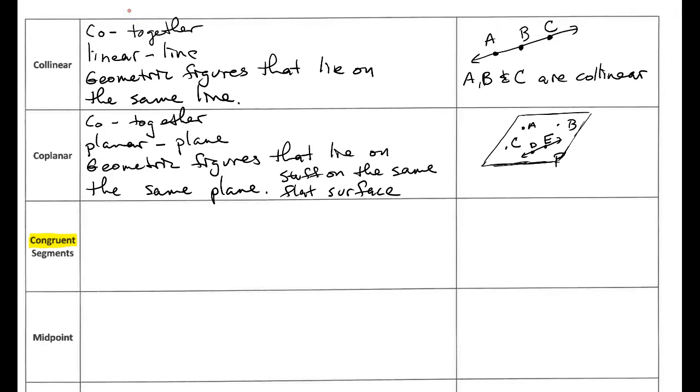The symbol that we're going to use is an equal sign but then we put this squiggle on the top. We're going to use this symbol all the time in geometry.